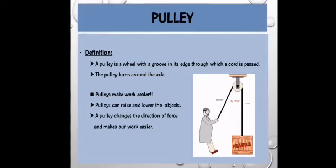And pulley turns around the axle. The wheel is a movable object, but the axle in this case is not a movable component. Pulleys are used to make our work easier, as it is obvious from the diagram as well.